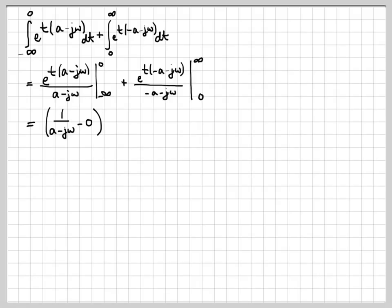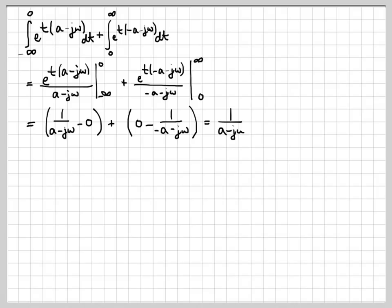Plugging in for the first integral: at t = 0, e^0 = 1, giving 1/(a - jω). At t = -∞, e^(-∞) = 0, so that term vanishes. For the second integral: at t = ∞, e to a negative infinity is 0. At t = 0, we subtract e^0 divided by (-a - jω), giving 0 minus 1/(-a - jω). The double negative makes the second term positive: 1/(a + jω).